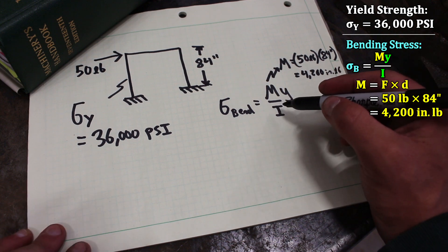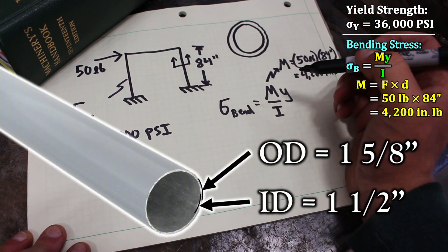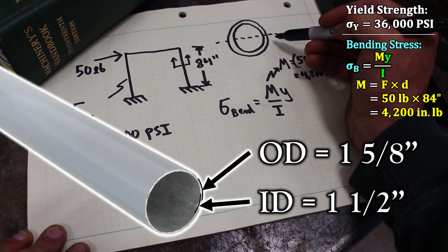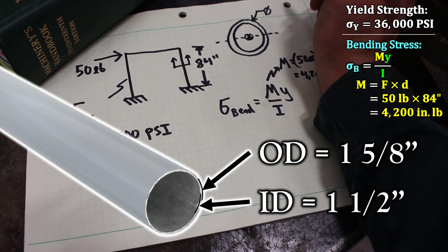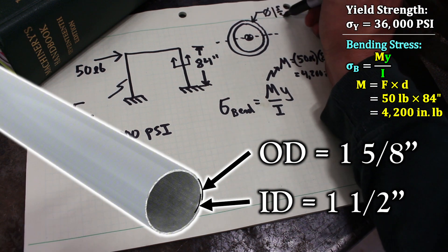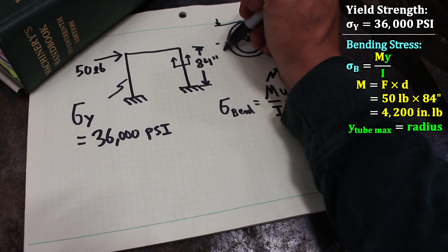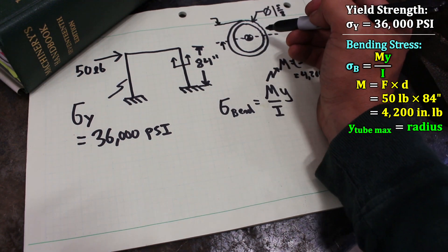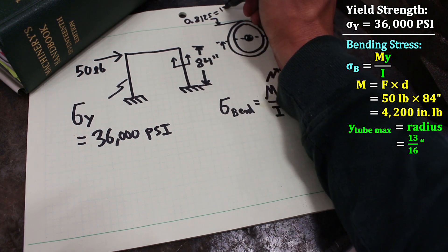The y and I are geometric parameters. So let's look at our leg right here. It was originally a tube. The bending axis or neutral axis goes through the tube's centroid and because the outer diameter is one and five eighths inches, the y value or the distance from the neutral axis is half of that. It's the radius or 0.8125, which is 13 sixteenths.